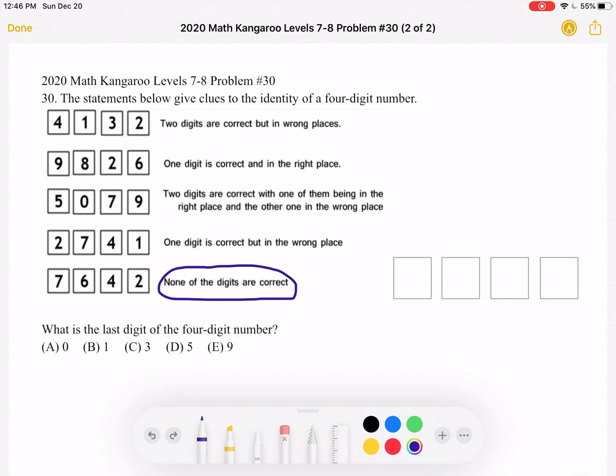So we know that none of the digits 7, 6, 4, and 2 are correct. So let's go through the other blocks and cross off the 7s, 6s, 4s, and 2s because those are definitely not correct. So let's start with our 7s, 6s, 4s, and then again the 2s.